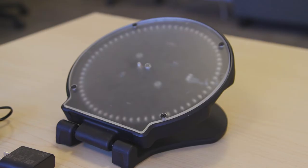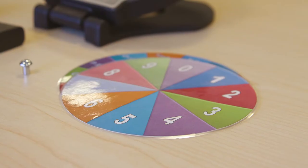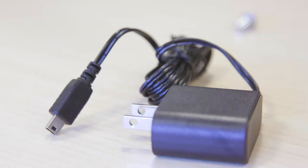Your spinner package includes a spinner device, an accessibility switch, 10 graphic overlay cards, a magnetic pin, and a USB charger.